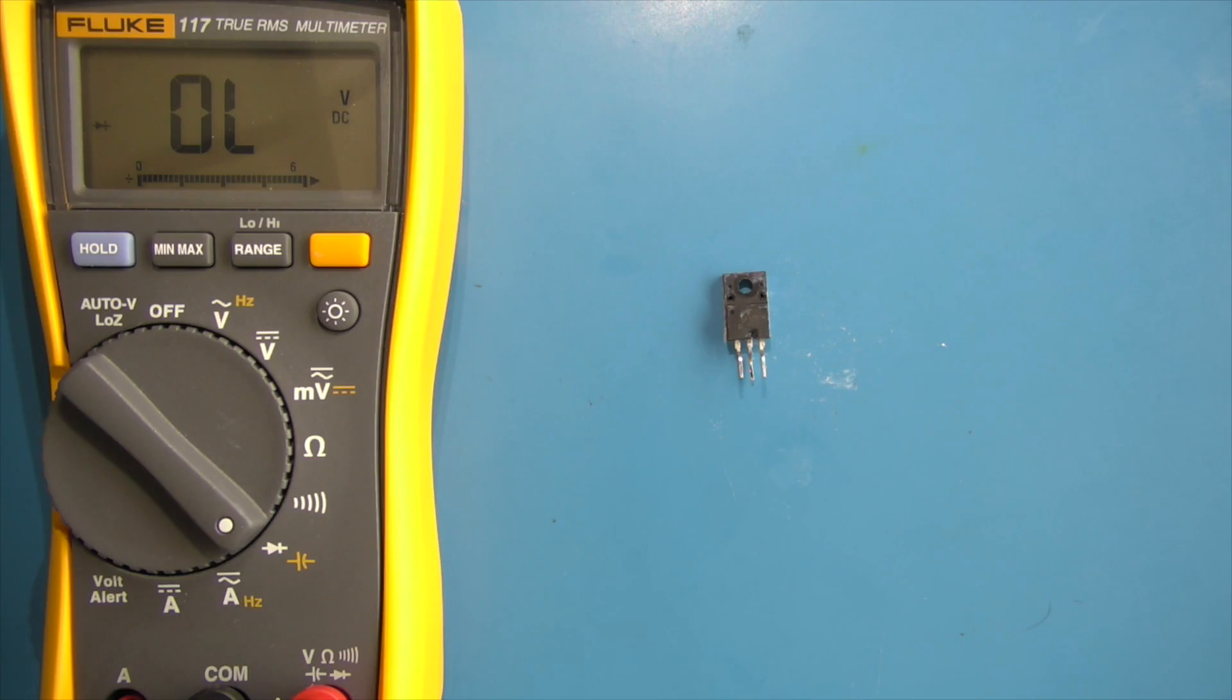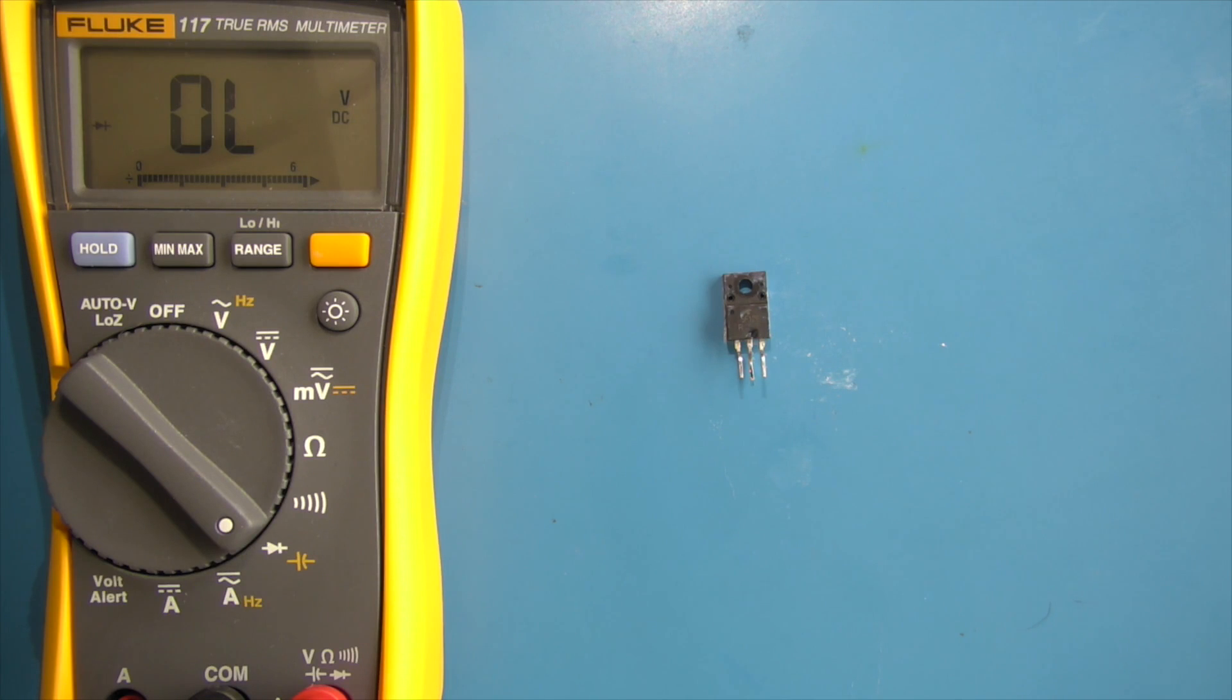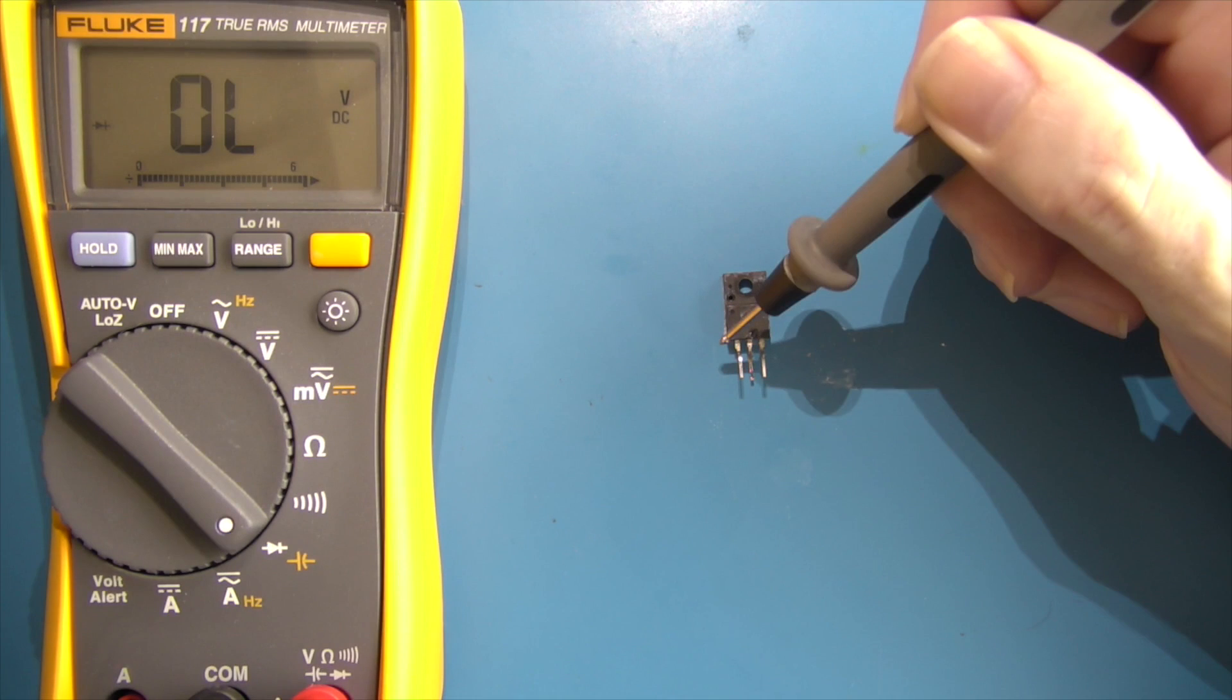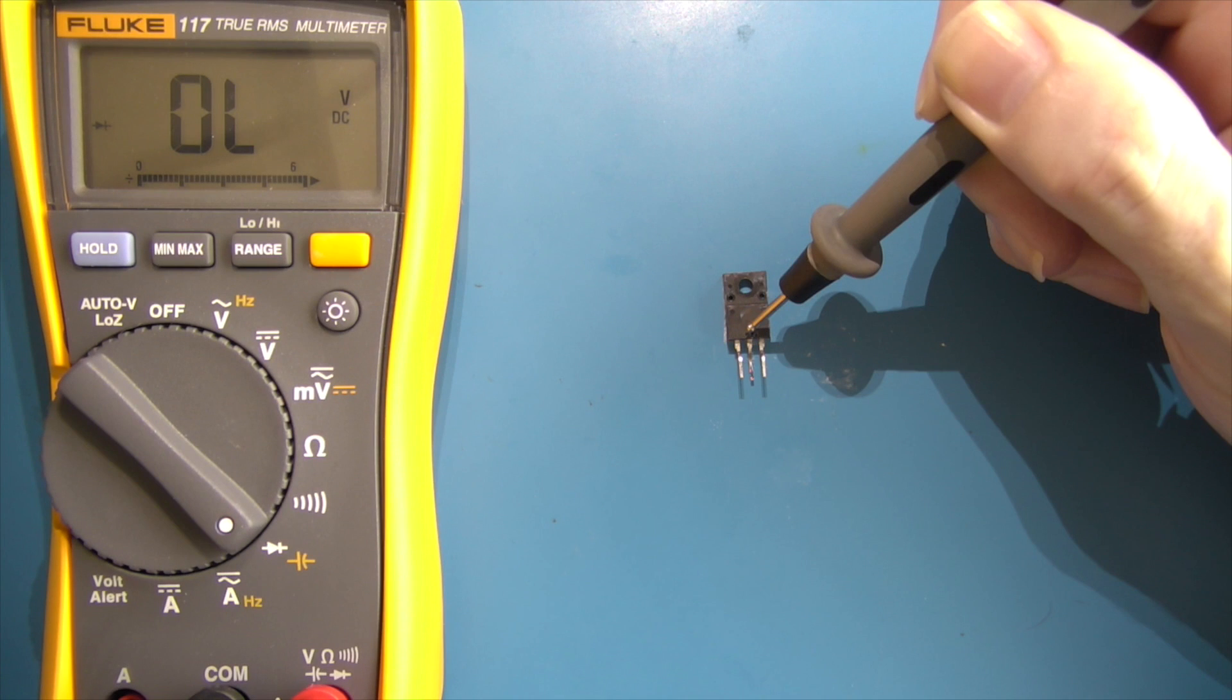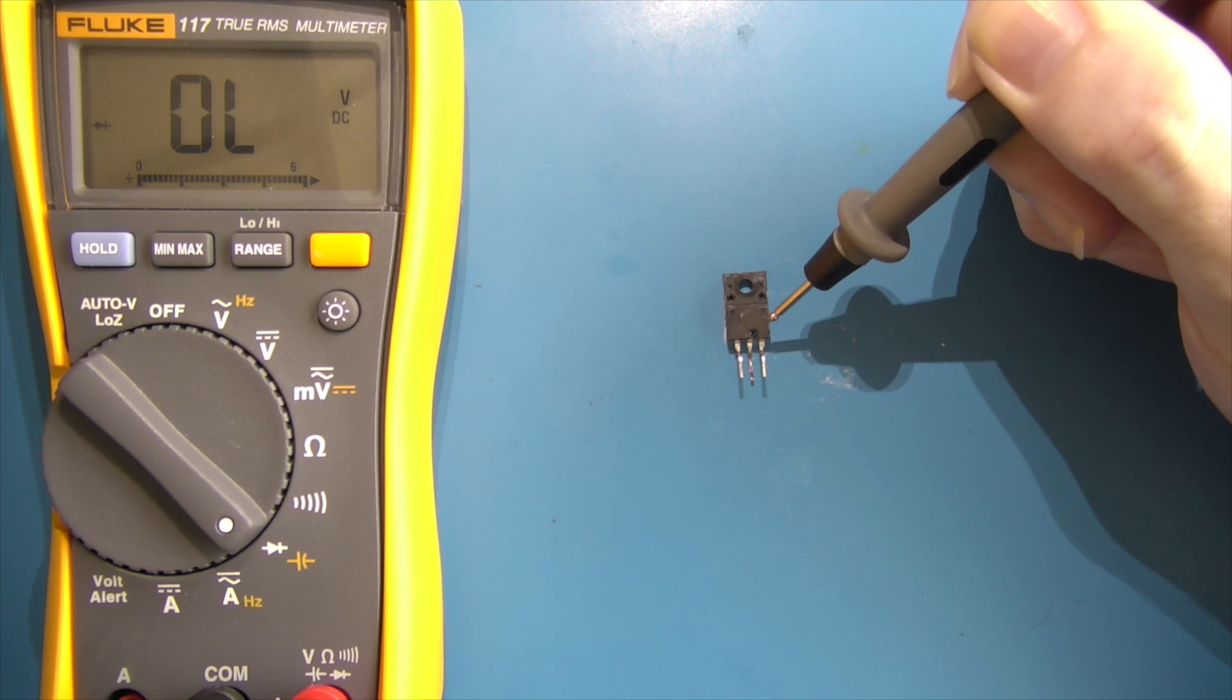This is a 45F128 N-channel IGBT in a TO-220 package. The first pin on the left is the gate, the middle pin is the collector, and the outside right pin is the emitter. I'm going to place my black common lead on the emitter.